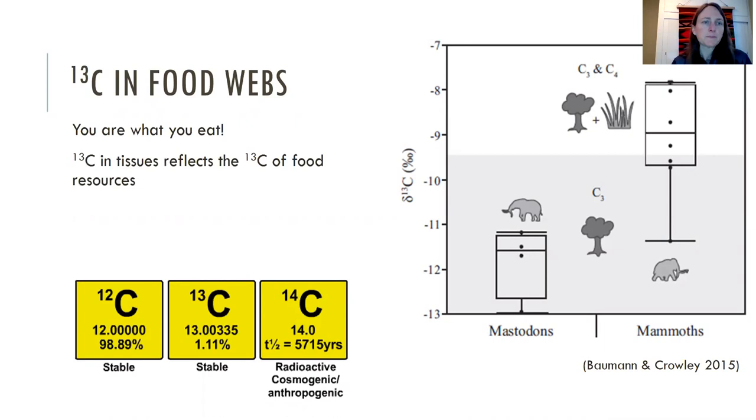So C13 in food webs means you are what you eat. The C13 in your tissues is reflected in the C13 of what you've been eating, your food resources, so it's just a direct relationship. And this is even true for extinct animals.